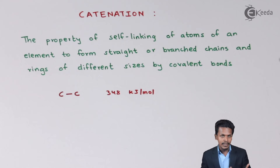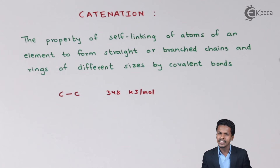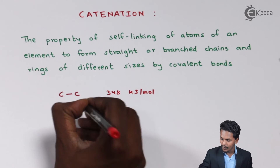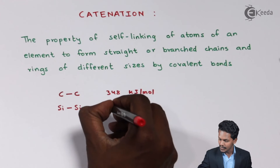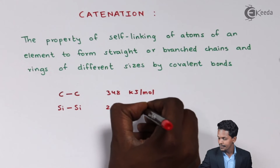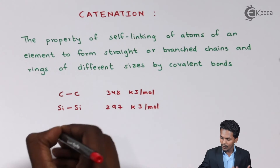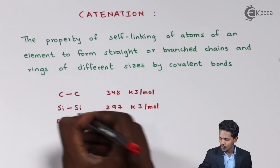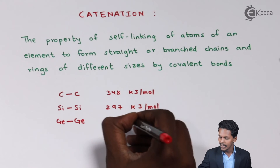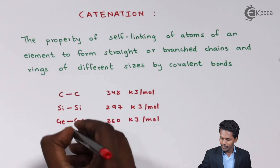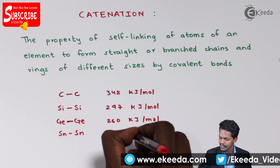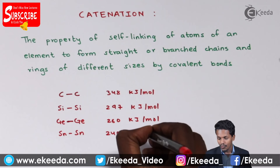Now let us look at the other group 14 elements. The bond enthalpy for silicon-silicon has been found to be 227 kJ/mol. For germanium-germanium, the bond enthalpy is 260 kJ/mol. And for tin-tin, the bond enthalpy has been found to be 240 kJ/mol.